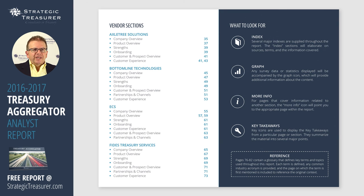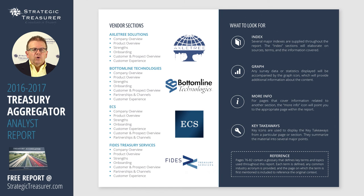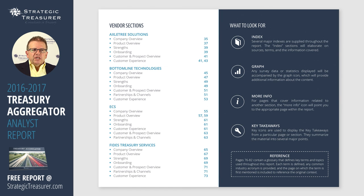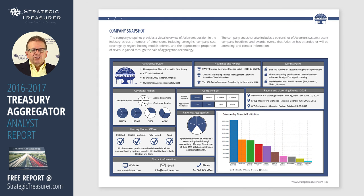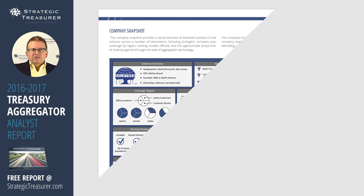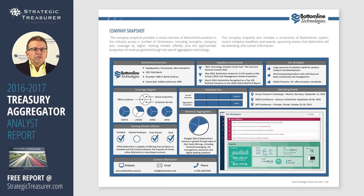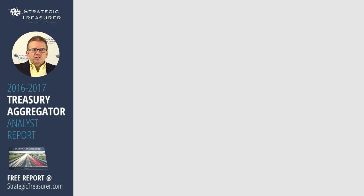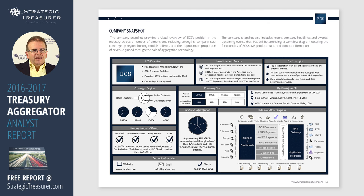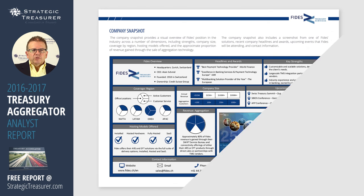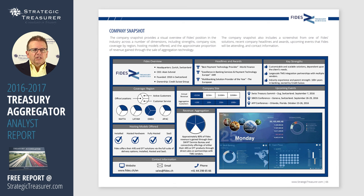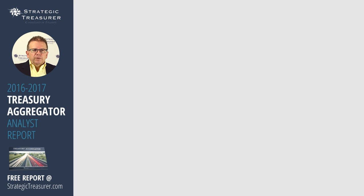You can see Axletree, Bottom Line, ECS, and Fideusz within this report. For each of these companies, there is a pictorial leading — a type of enriched infographic — that provides a company overview, an overview of the products they offer, the company and product strengths, their onboarding cycle and capabilities, customer and prospect overview including who they are targeting, as well as the customer experience.